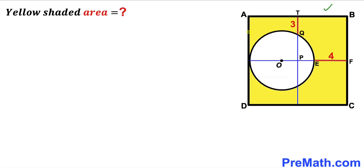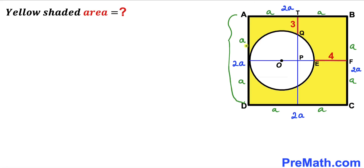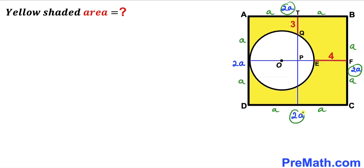Since the square has been divided into four quadrants, let me label the side length of each quadrant as lowercase a. Then the side length of the full square is going to be a plus a, which equals two times a.